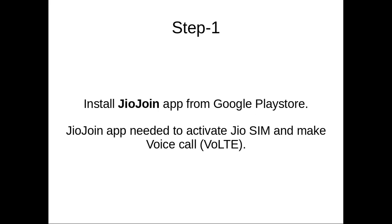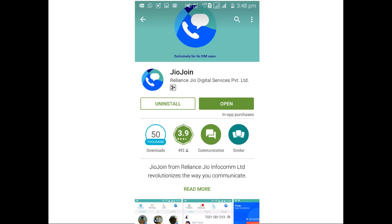First, we need to install the JioJoin app from the Google Play Store. This JioJoin app is required to activate the JioSIM and make voice calls. You can install it from the Google Play Store — it's free.